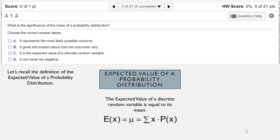So this is one of our choices. Choice C says it is the expected value of a discrete random variable. So the correct answer is choice C. That's your answer.